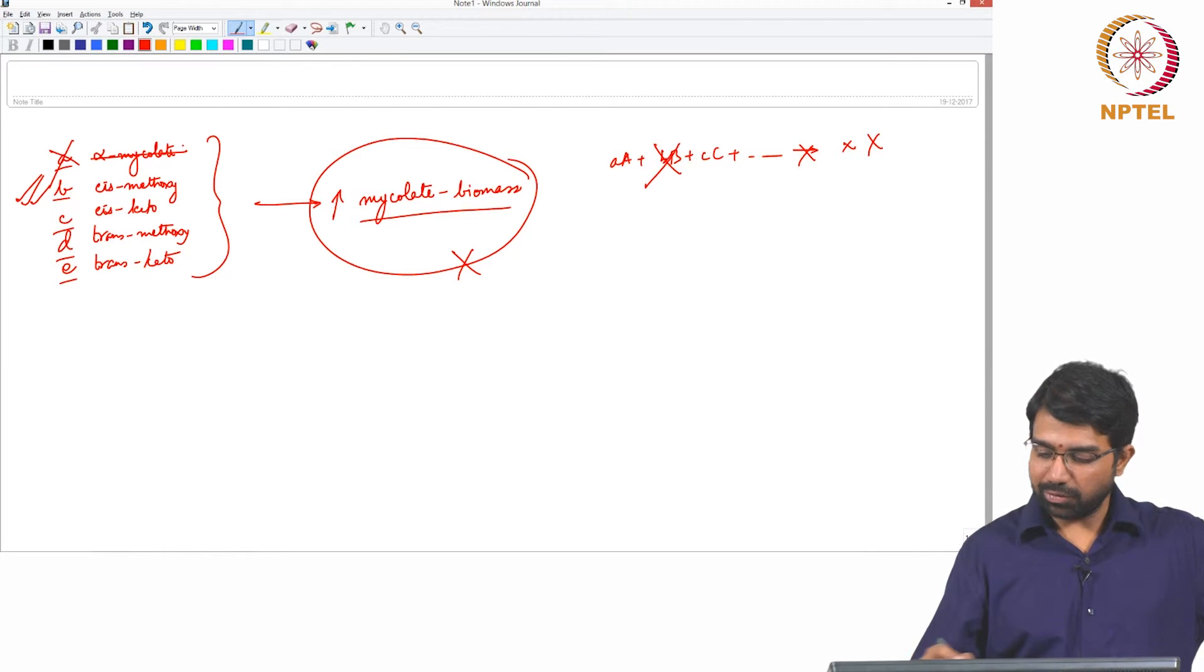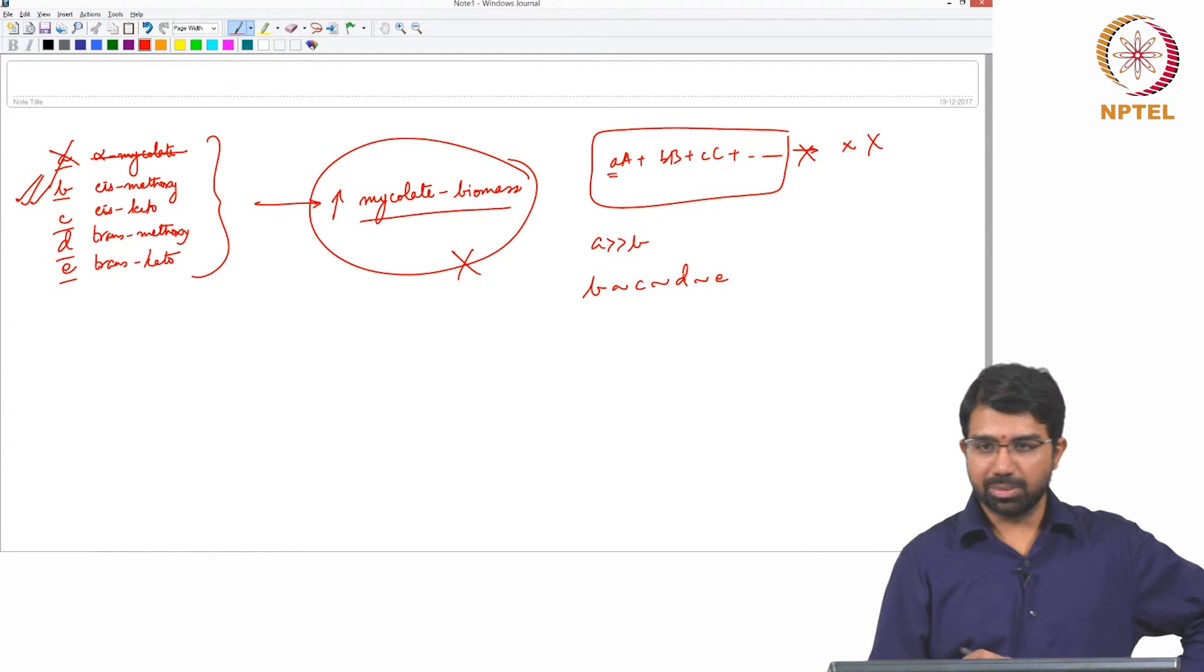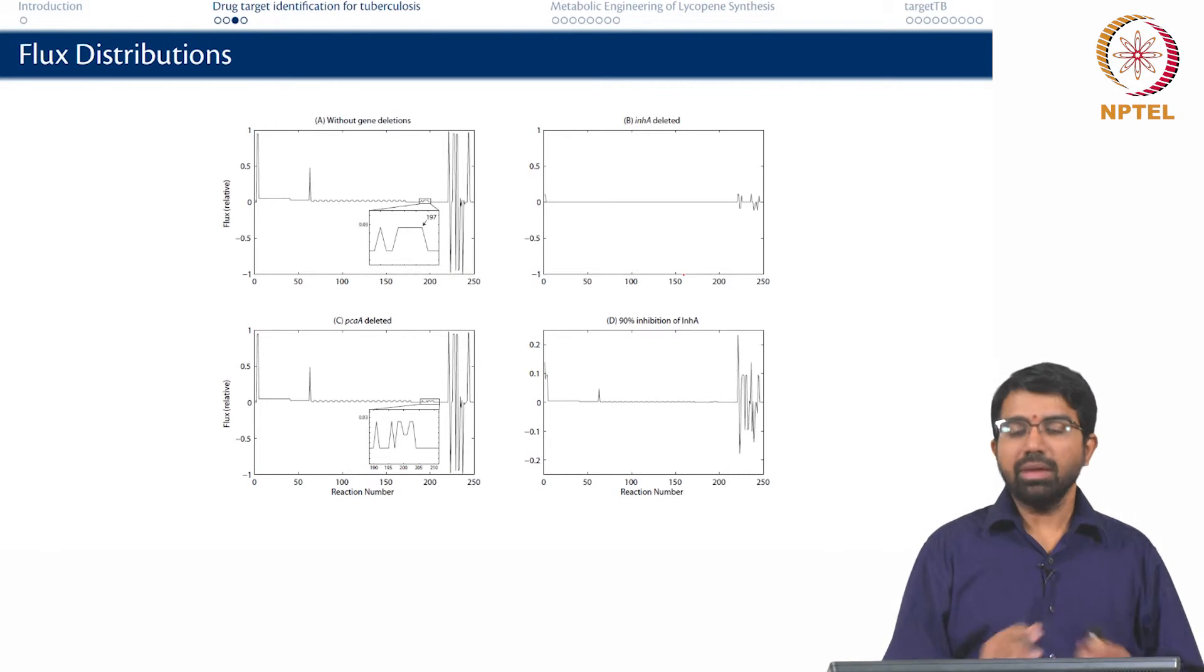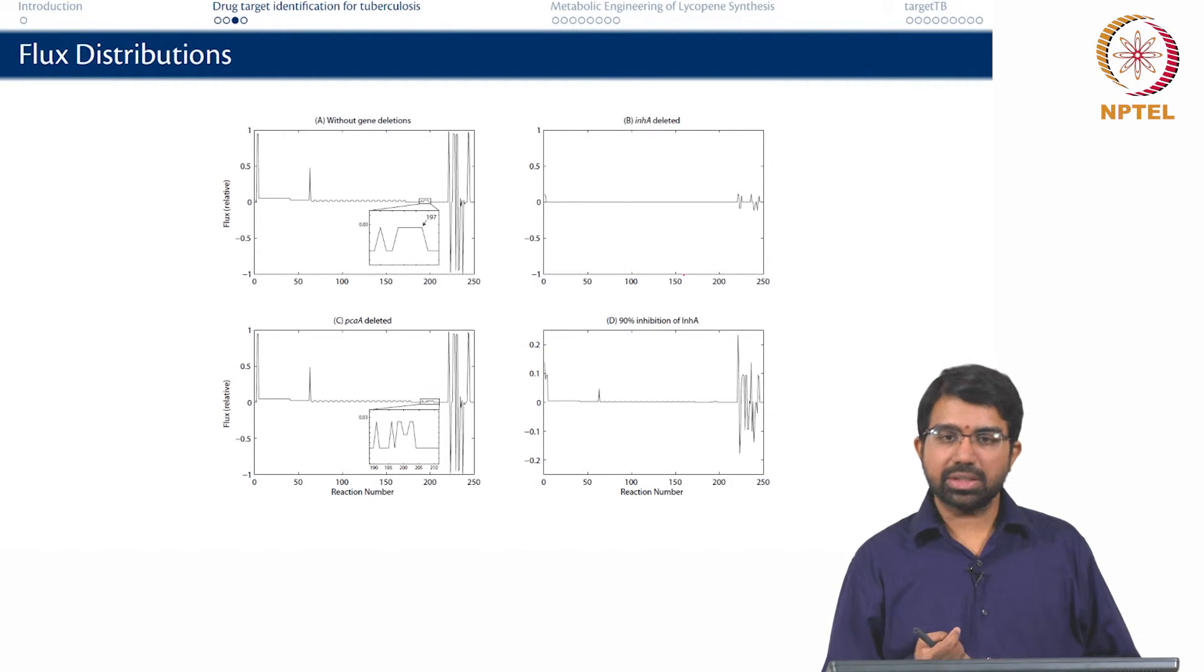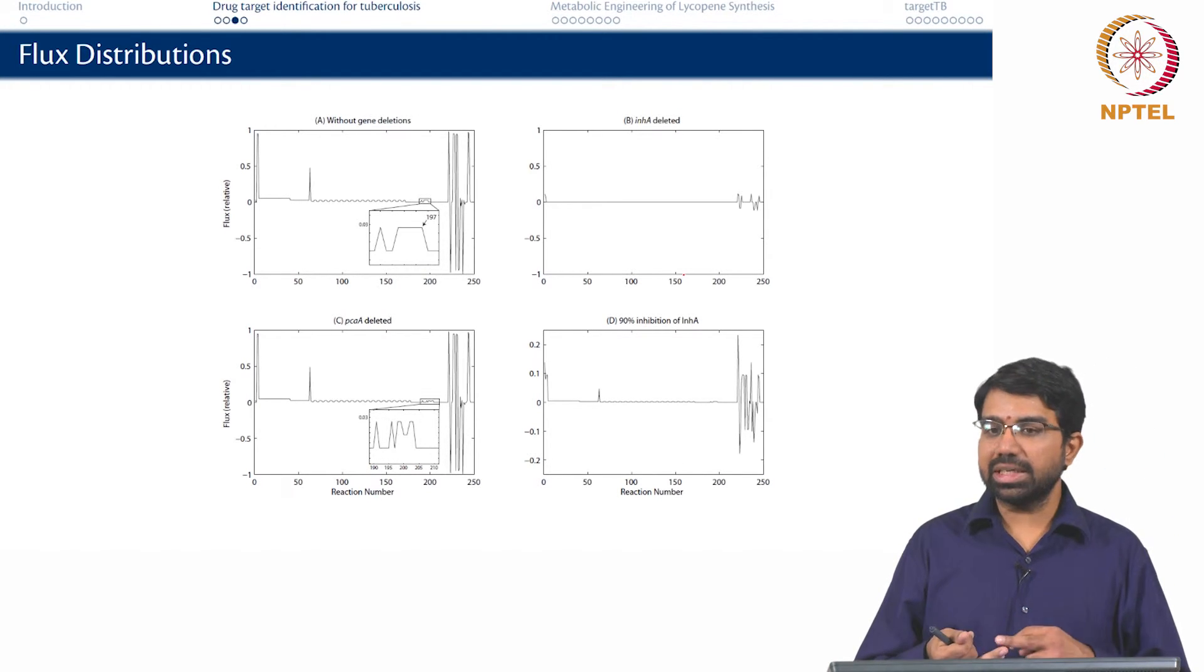So we said the objective function should actually just be this. It is some sort of prioritizing the mycolates in the order in which they are important. Alpha is the most important which means that A is much greater than B and so on. But then B, C, D are all relatively similar orders of magnitude and so on. So we set up an objective function of that sort and went ahead and did an FBA with multiple conditions. First is wild type, normal mycobacterium tuberculosis, and then we looked at deleting multiple genes or inhibiting a particular gene and so on.